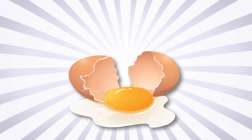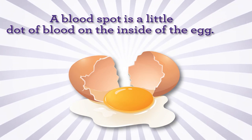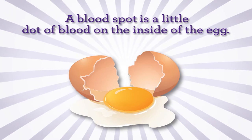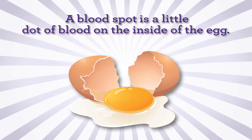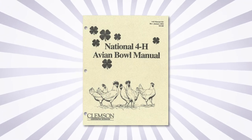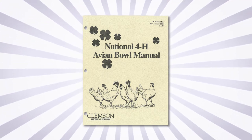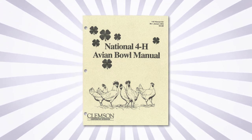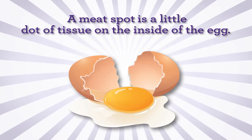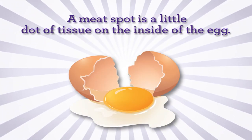First, what is the difference between a blood spot and a meat spot? A blood spot is a little dot of blood on the inside of the egg. It forms when the yolk first enters the oviduct. Check your 4-H avian bowl manual under Avian Systems for a detailed explanation about the hen's reproductive tract. A meat spot is a little bit of tissue instead of blood.